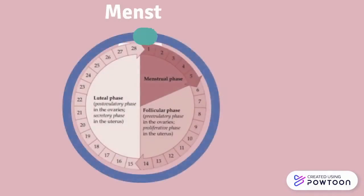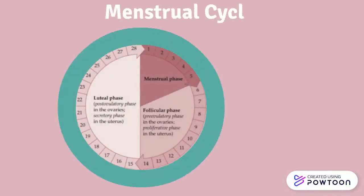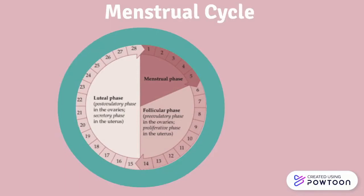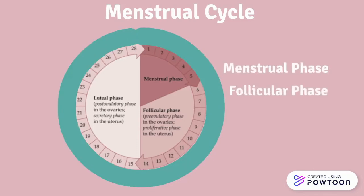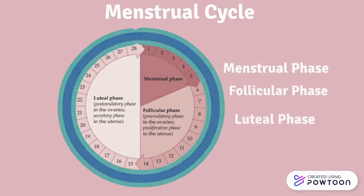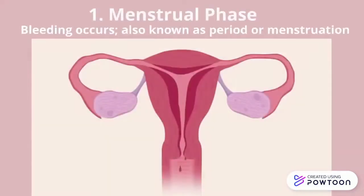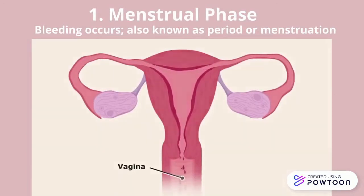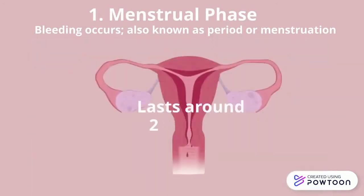Before we begin discussing secondary amenorrhea, let's clarify what a normal menstrual cycle constitutes. There are 3 phases of the menstrual cycle: the menstrual phase, follicular phase, and luteal phase. The menstrual phase is when bleeding occurs, often referred to as a period. This period of bleeding should last, on average, 2–7 days.